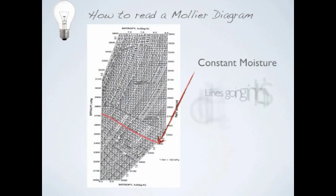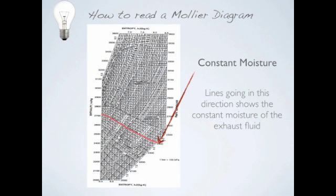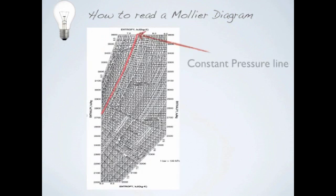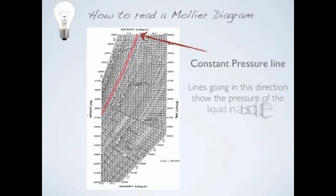Constant moisture line: lines going in this direction show the constant moisture of the exhaust fluid. Constant pressure line: lines going in this direction show the absolute pressure of the fluid.